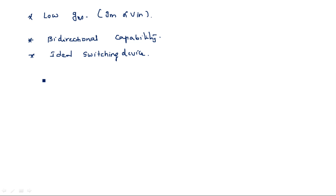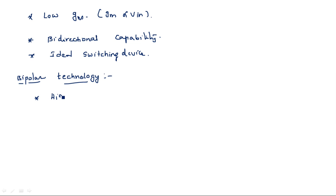Now let us look at the features of bipolar technology. The first and notable drawback of bipolar technology is high power dissipation, unlike CMOS which has very low power dissipation. Bipolar technology also has low input impedance.